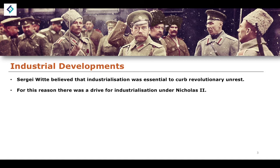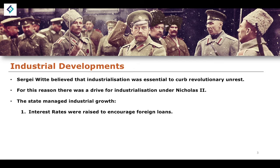This is one of the reasons why there was a drive towards more industrialization under the reign of Nicholas II. The state managed a number of areas of industrial growth. One of the things done immediately in terms of policy changes was an increase in interest rates. The reason for this is that higher interest rates can encourage foreign loans and therefore foreign investment into the state, bringing in more money, as foreign lenders would expect a greater return on their investment.